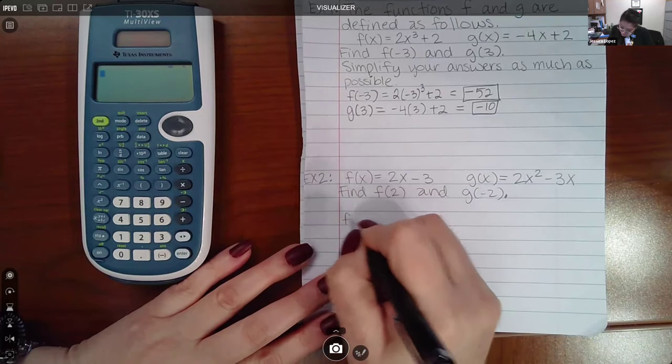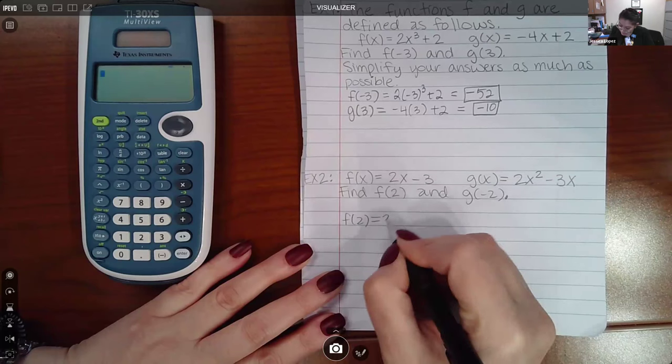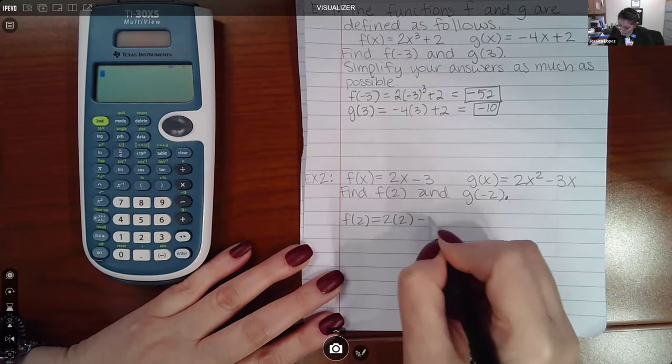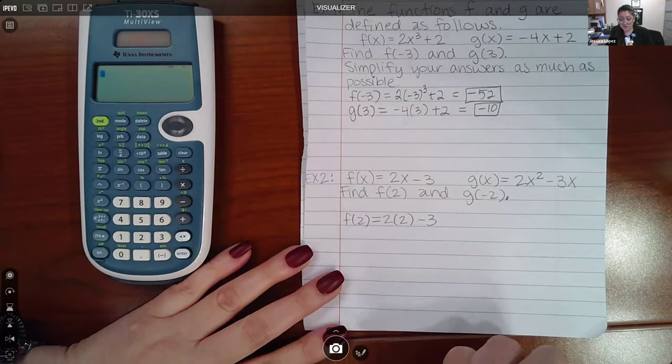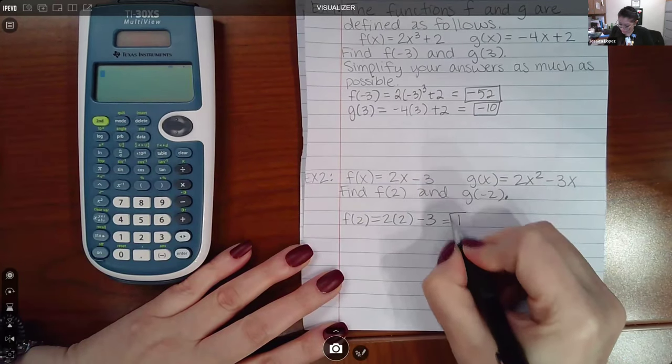So if I want to find f of 2, I'm taking this formula, and I'm replacing all of the x's with that 2. And when I do this computation, I get 1.